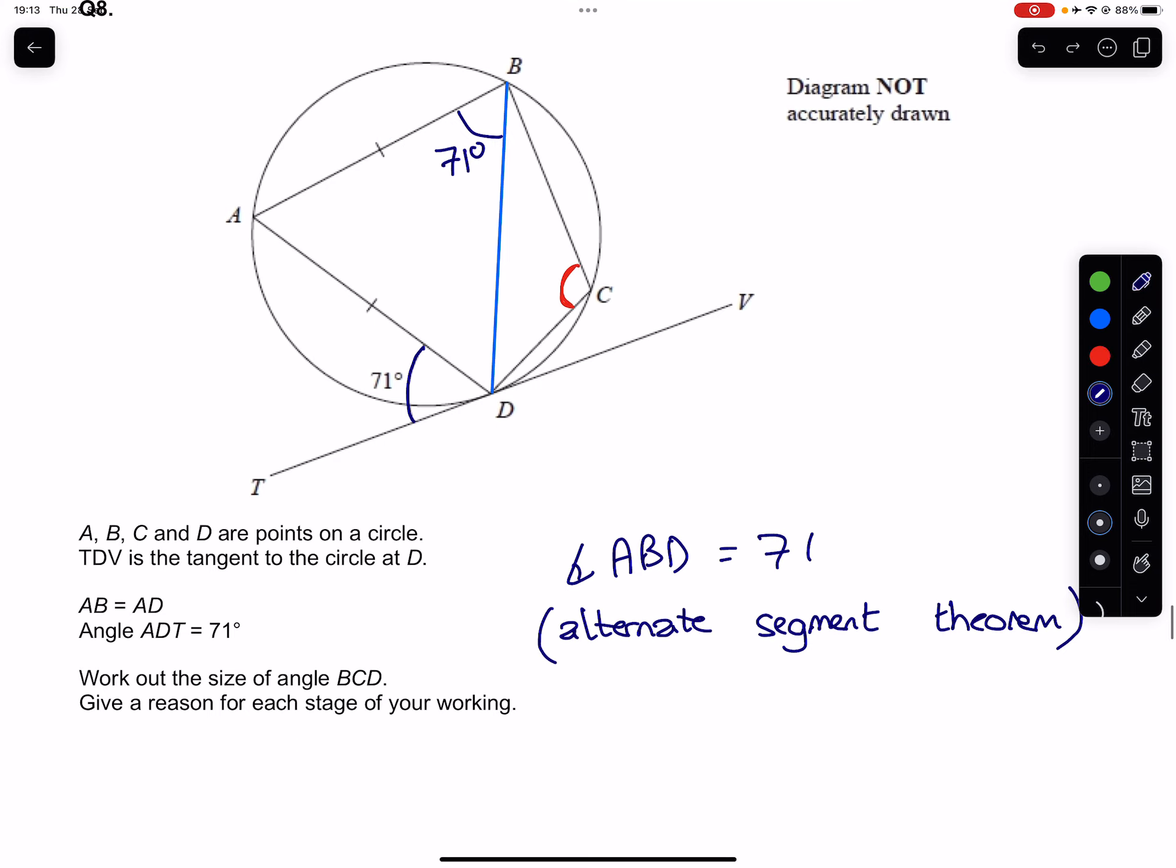In an isosceles triangle, the base angles are equal. So base angles in an isosceles triangle are equal.